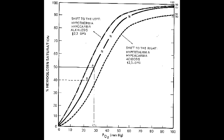What does the right shift in the oxygen hemoglobin dissociation curve indicate? A right shift indicates there is an increased affinity for hemoglobin for oxygen. Therefore, there is a decrease in unloading of oxygen to the tissues.